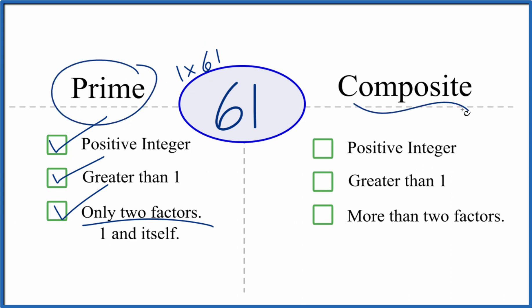But is it a composite number? Let's see, it's a positive integer, it's greater than 1. And are there more than two factors? There are only two factors, so not more. That means it's not a composite number.